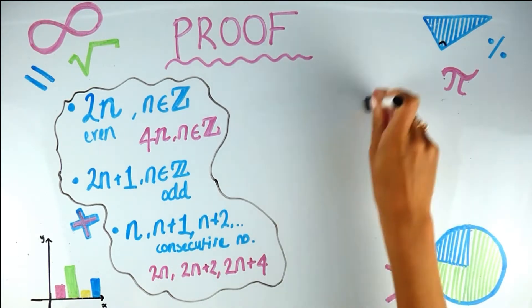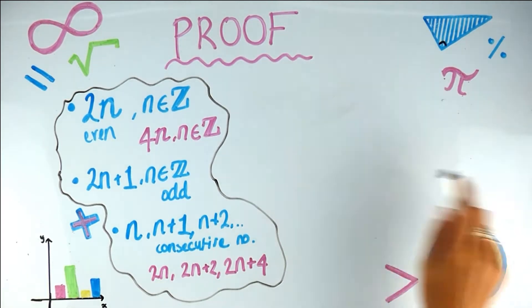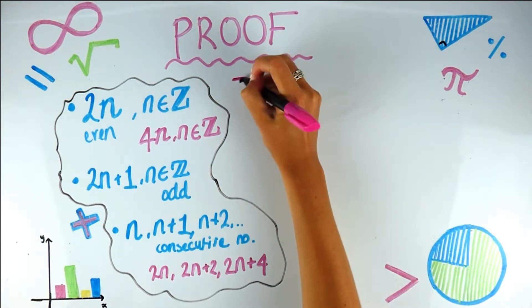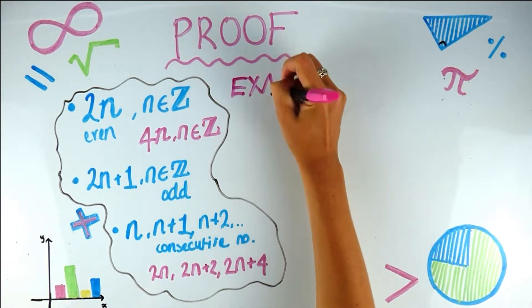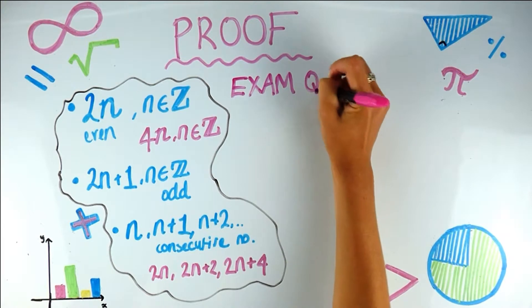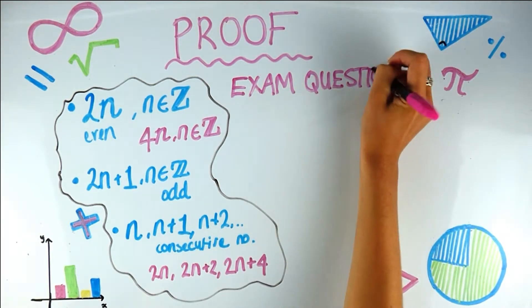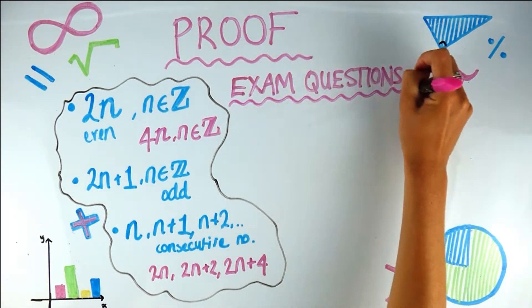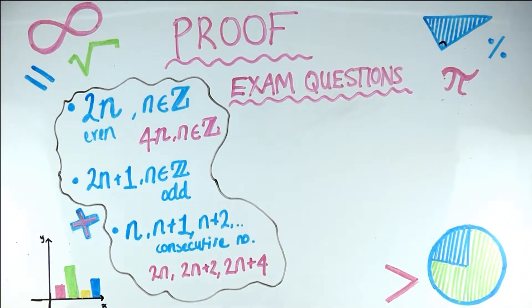So those are some very important key pieces of information we'll need to practise our proof questions. An even number is 2 times something; an odd number is 2 times something plus 1. Now let's move on to exam questions. A lot of similar ideas come up, so if you know how to do these it will be very helpful — they just change the numbers.